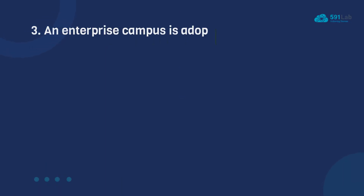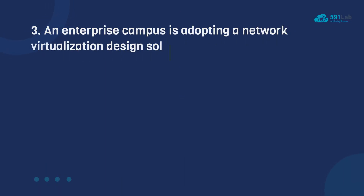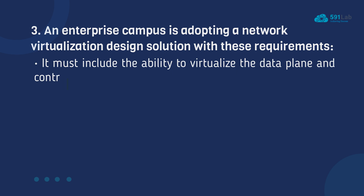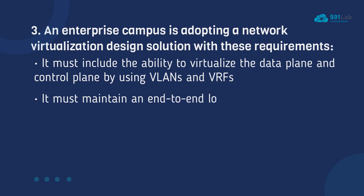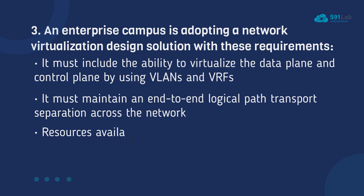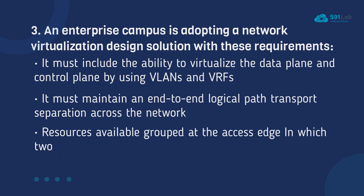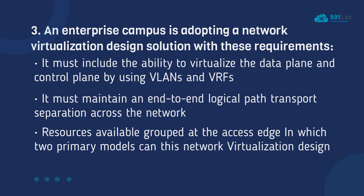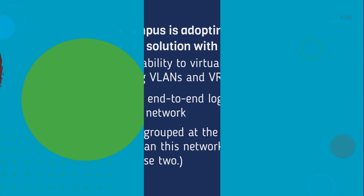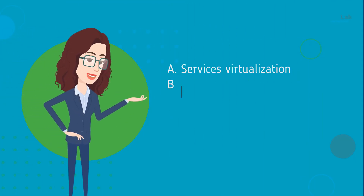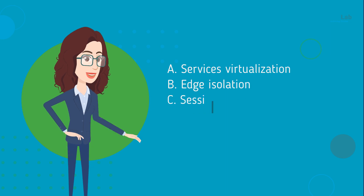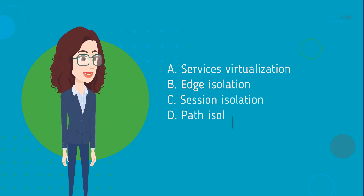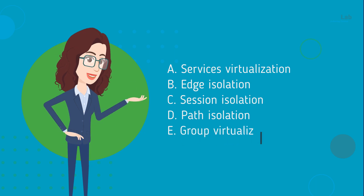Question 3: An enterprise campus is adopting a network virtualization design solution with these requirements: it must include the ability to virtualize the data plane and control plane using VLANs and VRFs, and it must maintain an end-to-end logical path transport separation across the network. In which two primary models can this network virtualization design be categorized? Choose two. A. Services virtualization. B. Edge isolation. C. Session isolation. D. Path isolation. E. Group virtualization.